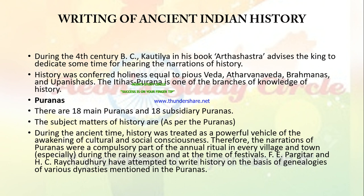Writing of Ancient Indian History. During the 4th century BC, Kautilya, in his book Arthashastra, advised the king to dedicate some time for hearing the narration of history. History was conferred holiness equal to the Parishishta Veda, Atharva Veda, Brahmanas and Upanishads.